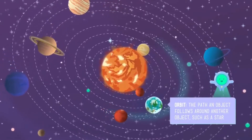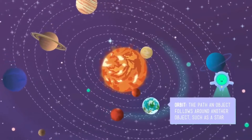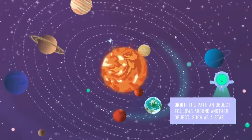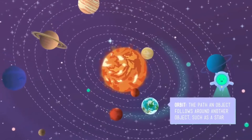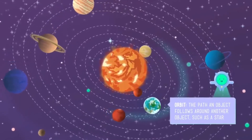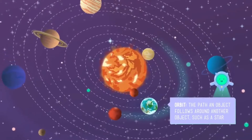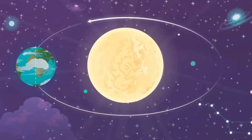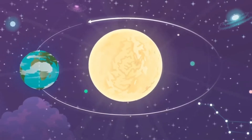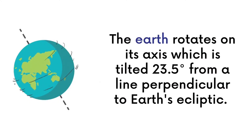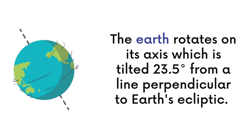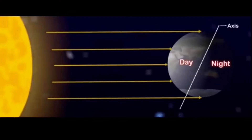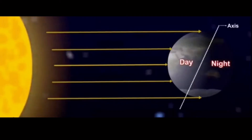There are lots of planets in the solar system, but of course the most important planet for us is the Earth, which is the planet where we live. Each planet revolves around the sun in a pathway called the orbit. You have learned that the Earth rotates on its axis, which is tilted at 23.5 degrees from a line perpendicular to Earth's ecliptic. The Earth completes one full rotation on its axis every 24 hours. This period of rotation corresponds to the length of one day on Earth.